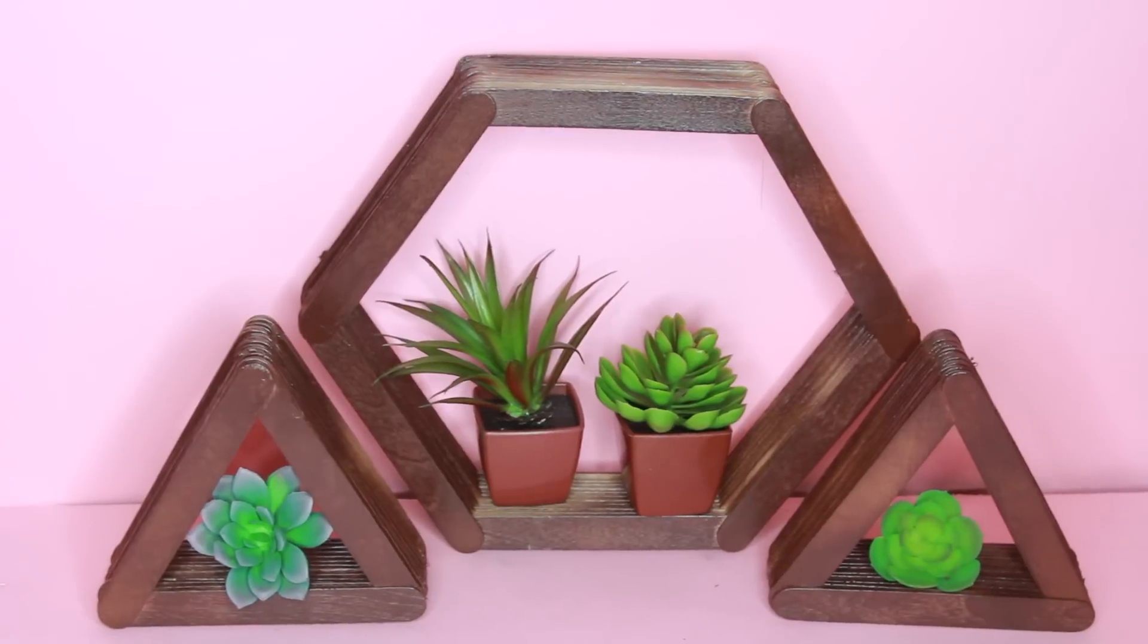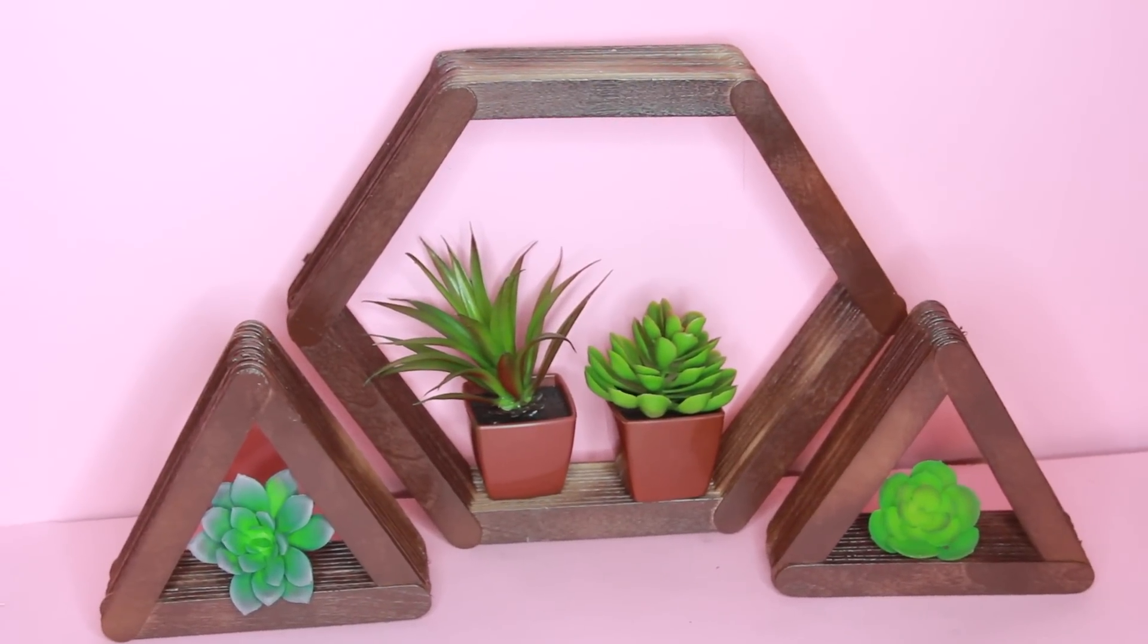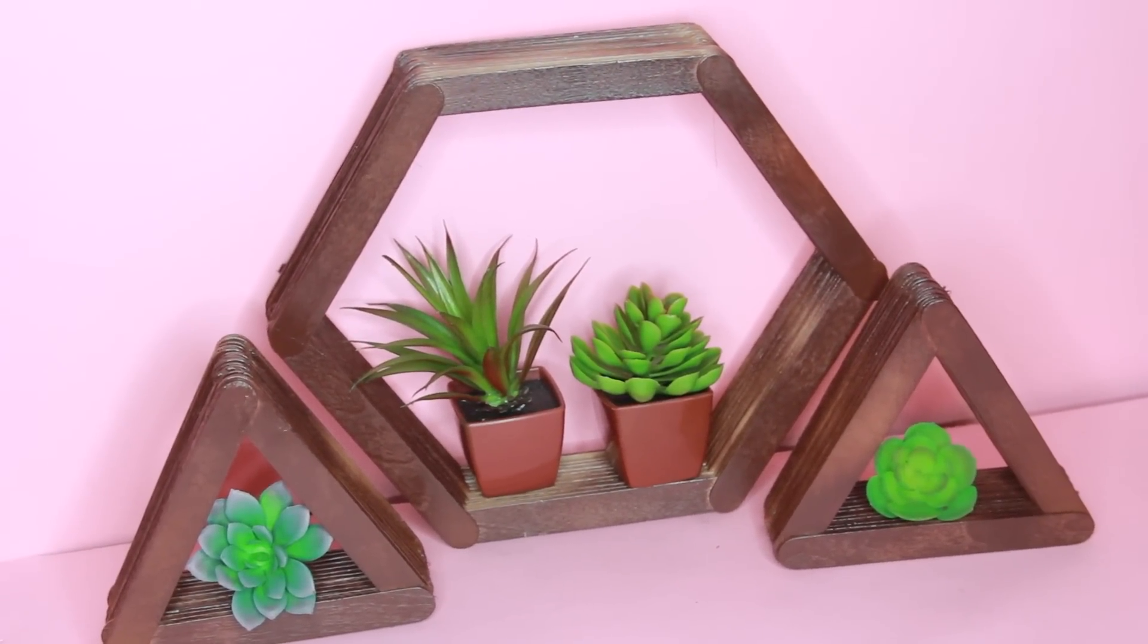We'll start off with the hanging shelves that are in the shape of the hexagon and the triangles.